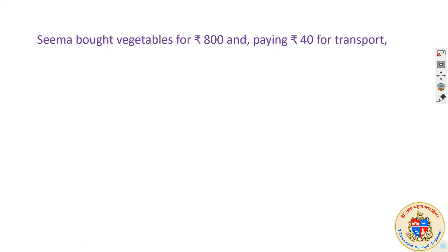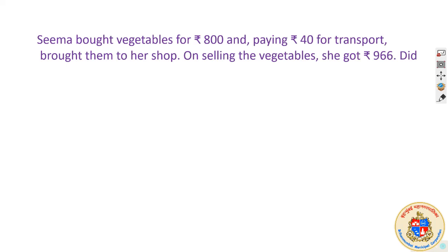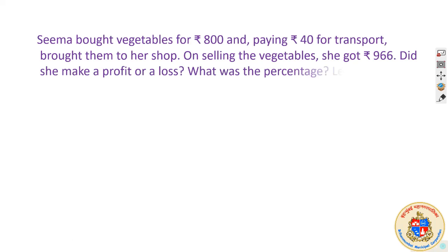Sima bought vegetables for Rs. 800, paying Rs. 40 for transport, and brought them to her shop. On selling the vegetables she got Rs. 966. Did she make a profit or a loss? And what was the percent? Let us find out the total cost price first, then we can begin with the sum.